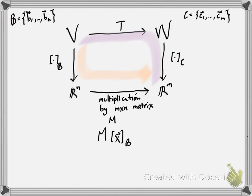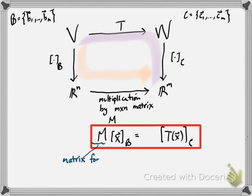What does this M by N matrix M have to satisfy? If I take a vector X from V, compute its B coordinates, and then multiply by M — going down along the beige map — this is the same as going across the top, evaluating T on X, and then down using the coordinate map on C. So M times the B coordinate vector of X equals the C coordinate vector of TX. This matrix M is called the matrix for T relative to B and C.